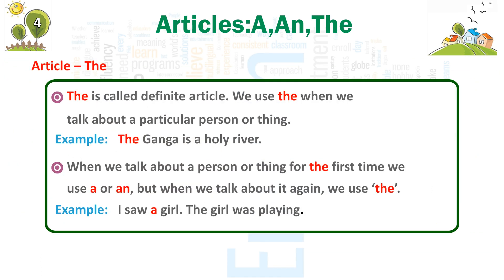Article THE. The is called the definite article. We use THE when we talk about a particular person or thing. Example: The Ganga is a holy river. When we talk about a person or thing for the first time, we use A or AN. But when we talk about it again, we use THE. Example: I saw a girl. The girl was playing.